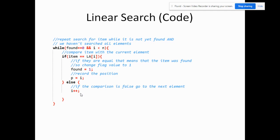Here is the main code for the linear search. We have a while loop, and the condition says: while found equals zero AND i is less than n. Found equals zero means the search is not yet successful, and i less than n means we haven't searched all of the items yet.